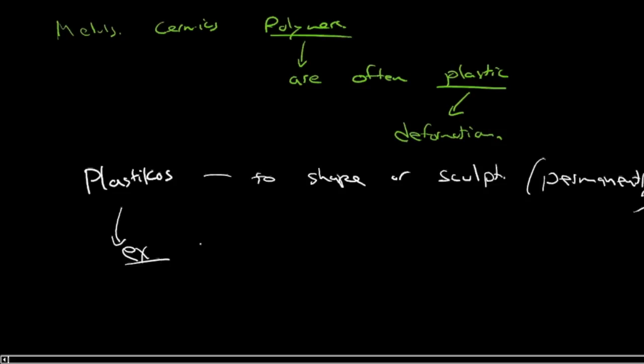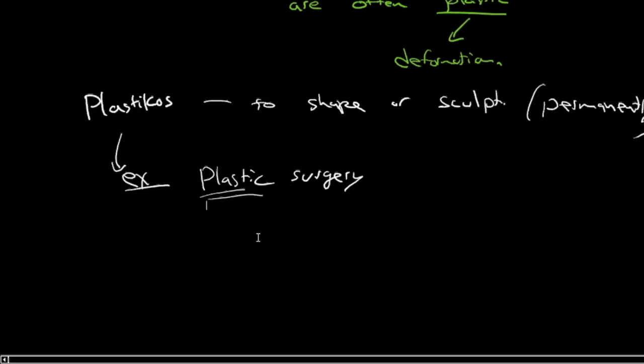Plastic surgery is not called plastic surgery because you're implanting polymers. Although, sometimes, surgeons do. In fact, that's quite important. Now, whether it's for reconstructive purposes or cosmetic, there are polymers that are implanted. But it's called plastic surgery because you're changing anatomical features.